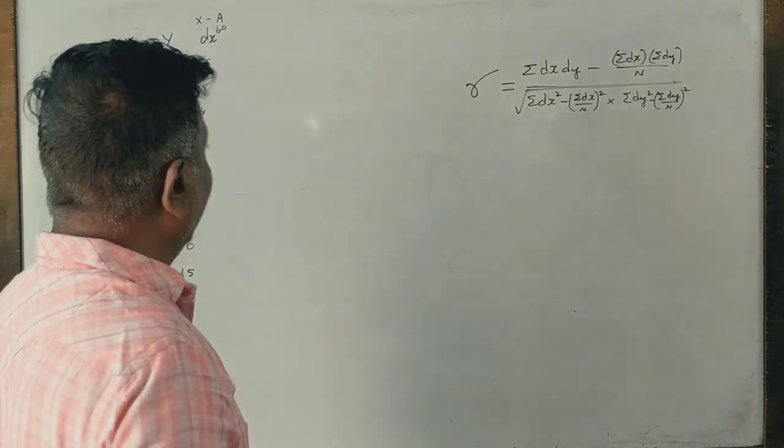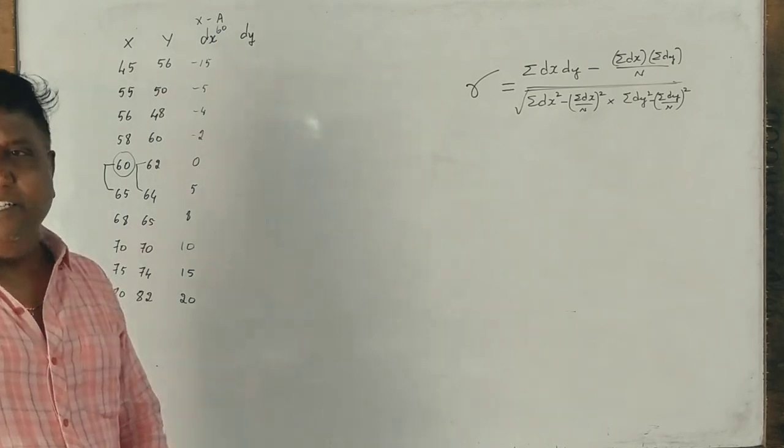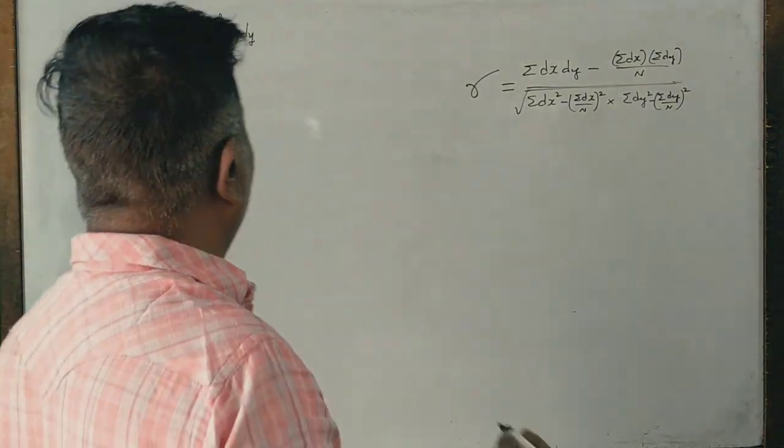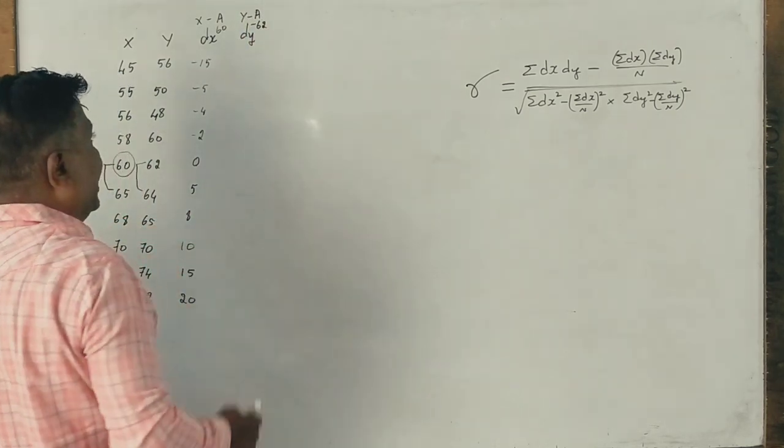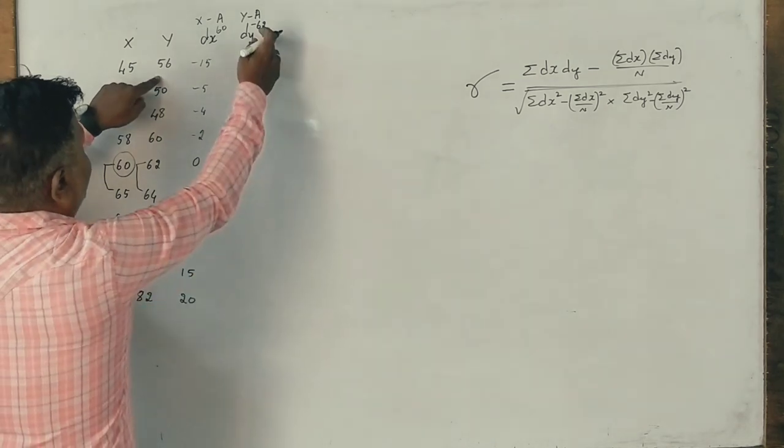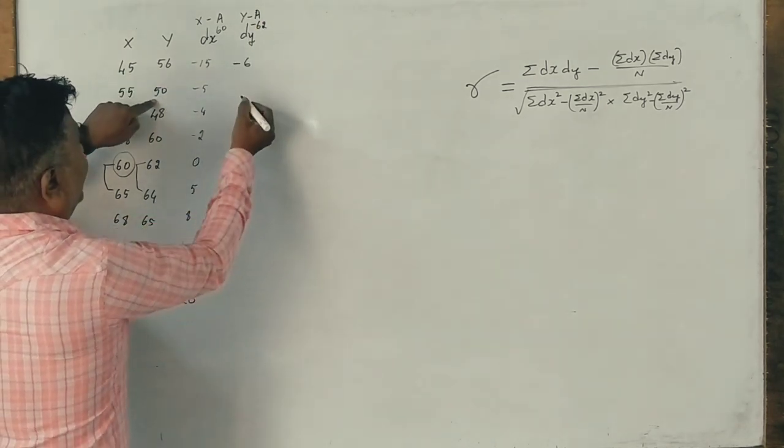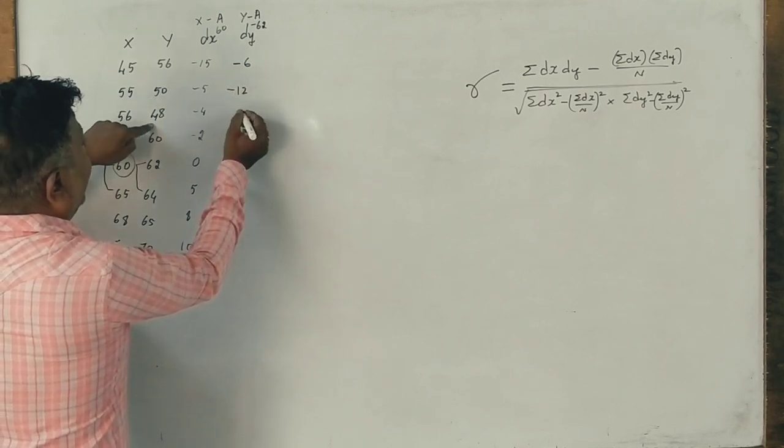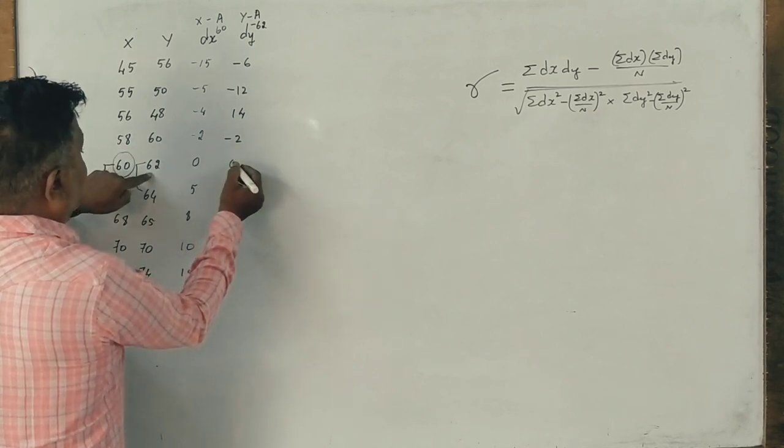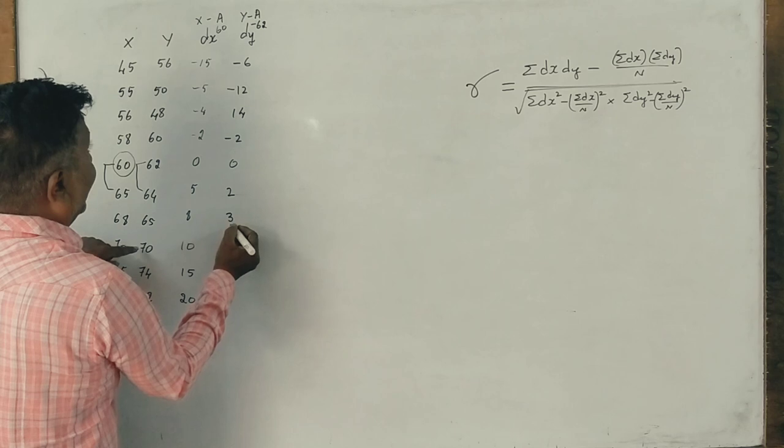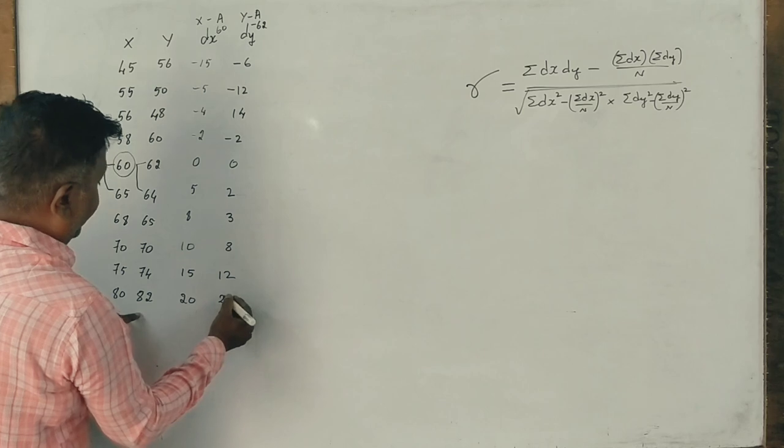Then dy is y minus A. The assumed mean for Y is also 62. So 56 minus 62 is minus 6, 50 minus 62 is minus 12, 48 minus 62 is minus 14, 60 minus 62 is minus 2, 62 minus 62 is 0, 64 minus 62 is plus 2, 65 minus 62 is plus 3, 70 minus 62 is plus 8, 74 minus 62 is plus 12, 82 minus 62 is plus 20.